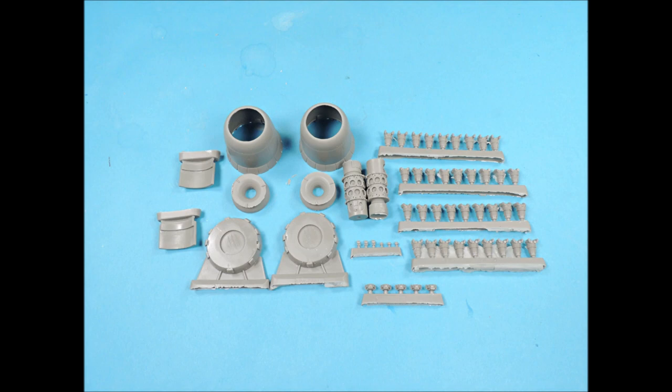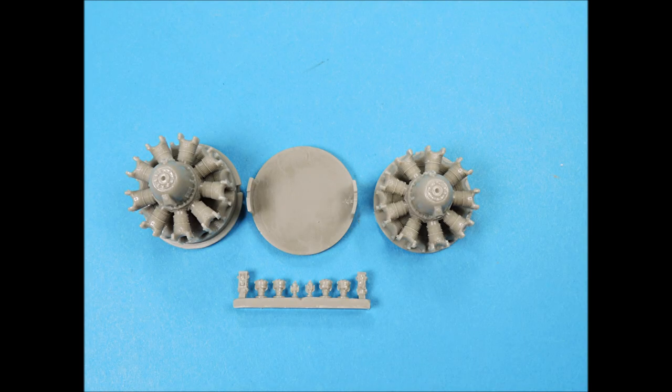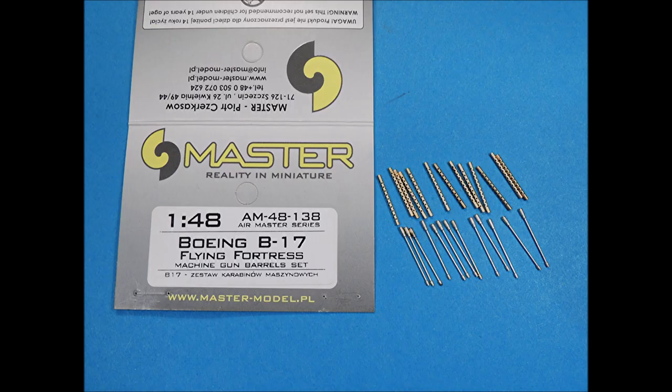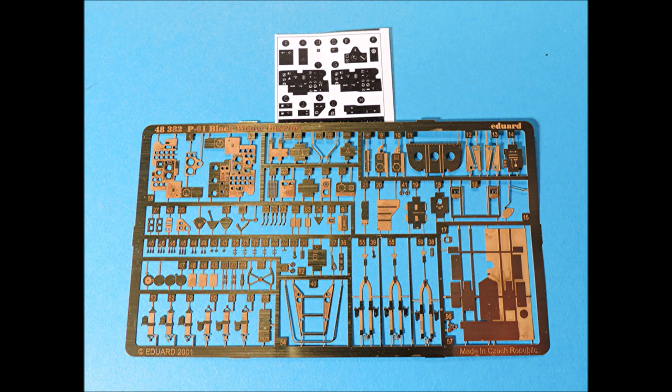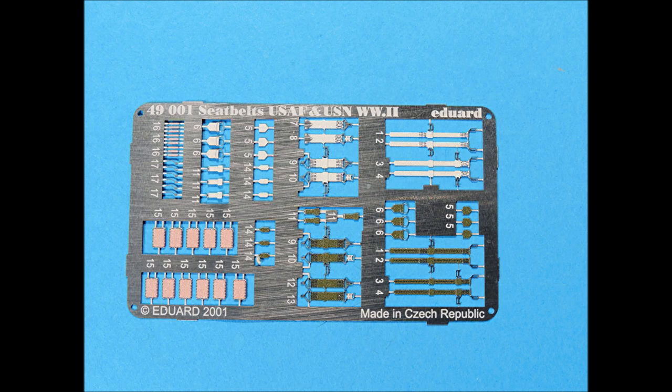Here is the complete Vector Engine Detail Set. Here are the QuickBoost replacement engines. The photoetch interior detail set for this kit by Eduard is nicely done and Eduard also makes an exterior detail set. The Eduard pre-painted seat belts will also add another level of realism to the interior.